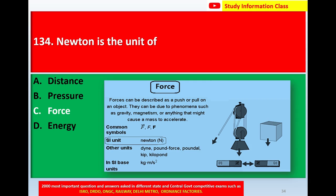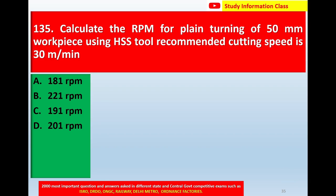For question number 134, Newton is the unit of — correct answer is option C: force. Next, question number 135: Calculate the RPM for plane turning of a 50 mm workpiece using an HSS tool, with a recommended cutting speed of 30 meters per minute.